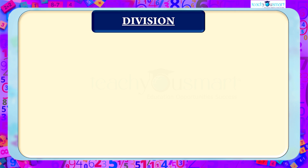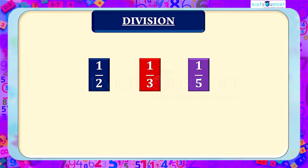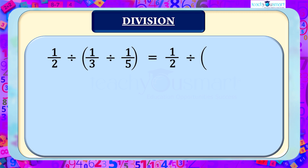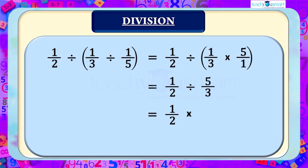Finally, let's examine the division of rational numbers, again using 1/2, 1/3, and 1/5. The first grouping: (1/2 ÷ 1/3) ÷ 1/5 = 1/2 ÷ (1/3 × 5/1) = 1/2 ÷ 5/3 = 1/2 × 3/5 = 3/10.